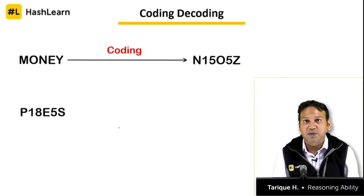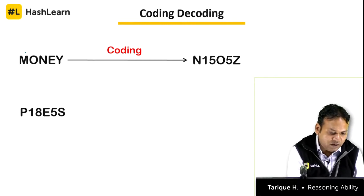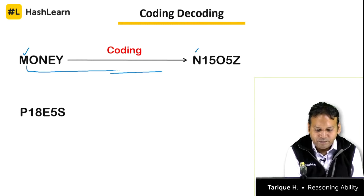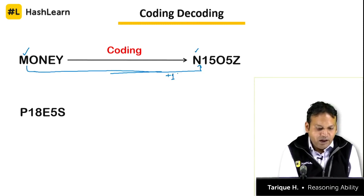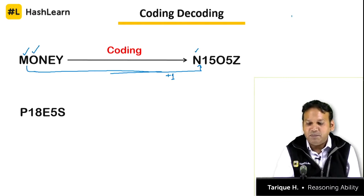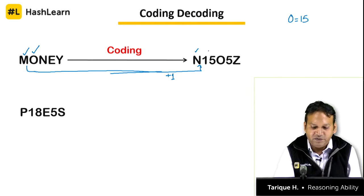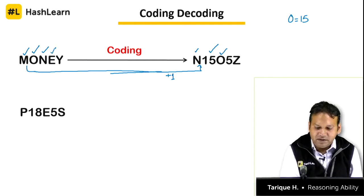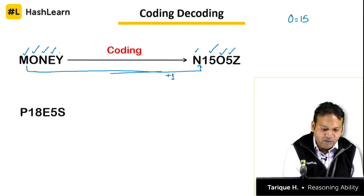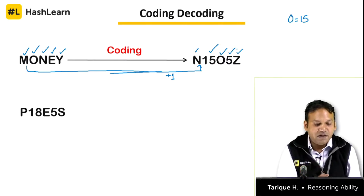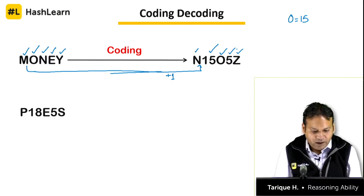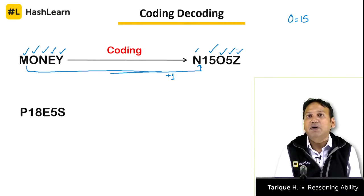Let us see what technique was used in this example. The first letter of 'money' is M, and M plus 1 gives N. The letter O has positional value 15, so that is 15. The third letter N plus 1 gives O. The positional value of E is 5, giving us 5. And Y plus 1 gives Z. So the technique is: for the first, third, and fifth letters do plus 1; for the second and fourth letters take the positional value.